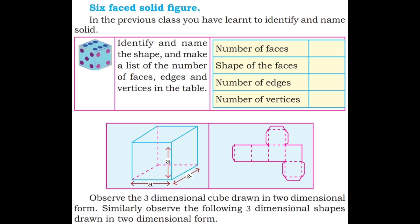Next: a table of solid figures. In the previous class you learnt to identify and name solids. Identify the shape and make a list of the number of faces, edges, and vertices. For example, a die is in the cube shape — number of faces is six, shape of the faces is square, number of edges is twelve, number of vertices is eight.